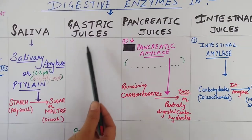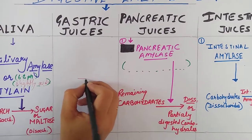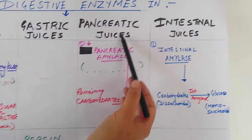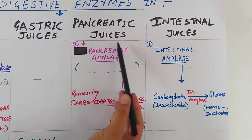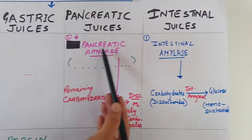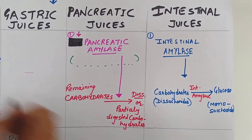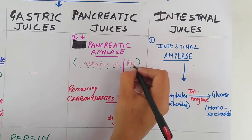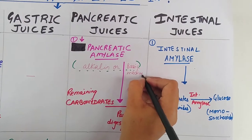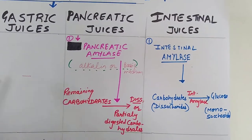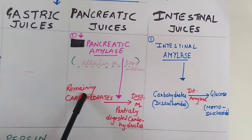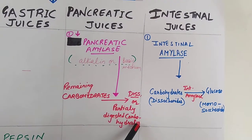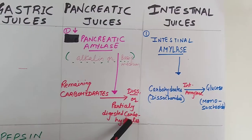Gastric juices are secreted by the stomach. In gastric juice, there is no enzyme for the digestion of carbohydrates. When food moves forward, pancreatic juices act upon it. Pancreatic juices contain an enzyme called pancreatic amylase, which acts in an alkaline or basic medium. Pancreatic amylase acts upon the remaining carbohydrates left undigested in the mouth, converting them into disaccharides or partially digested carbohydrates.